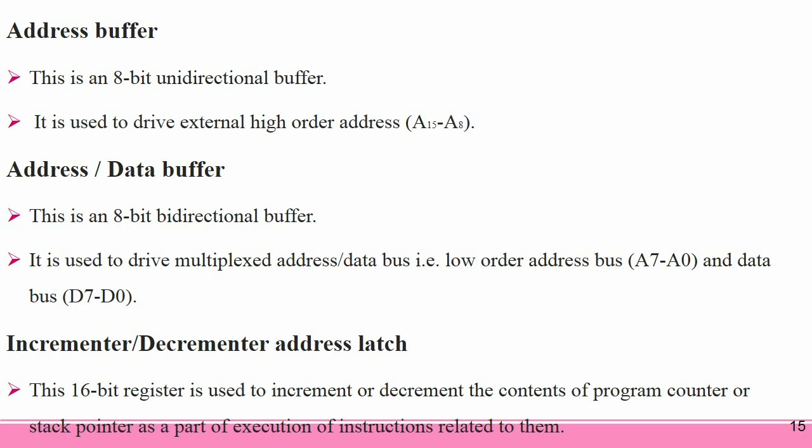Address Buffer: This is an 8-bit unidirectional buffer used to drive the external high-order address lines A15 to A8. Address and Data Buffer: This is an 8-bit bidirectional buffer used to drive the multiplexed address or data bus, i.e., low-order address bus A7 to A0 and data bus D7 to D0.